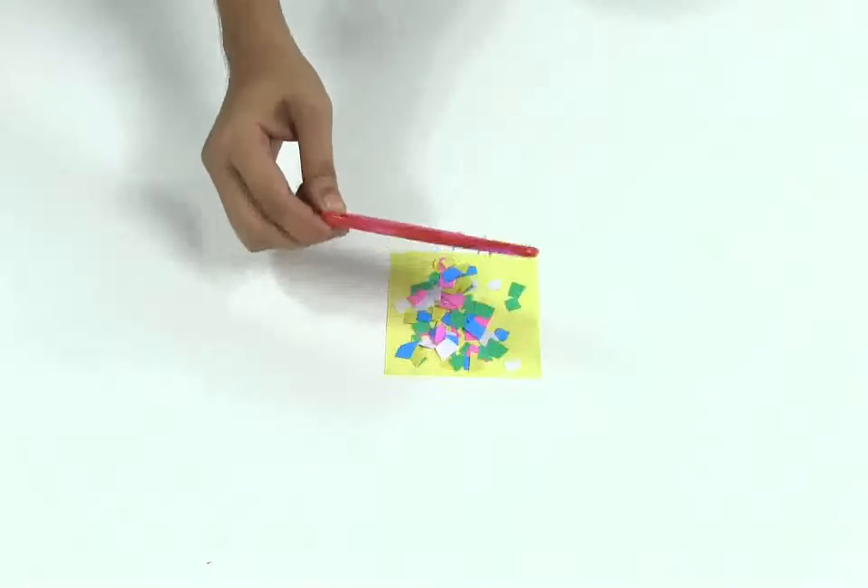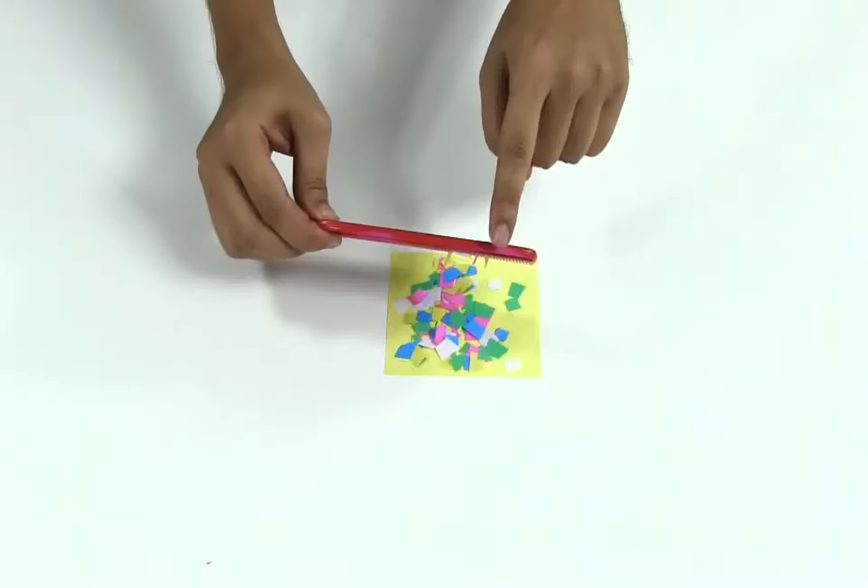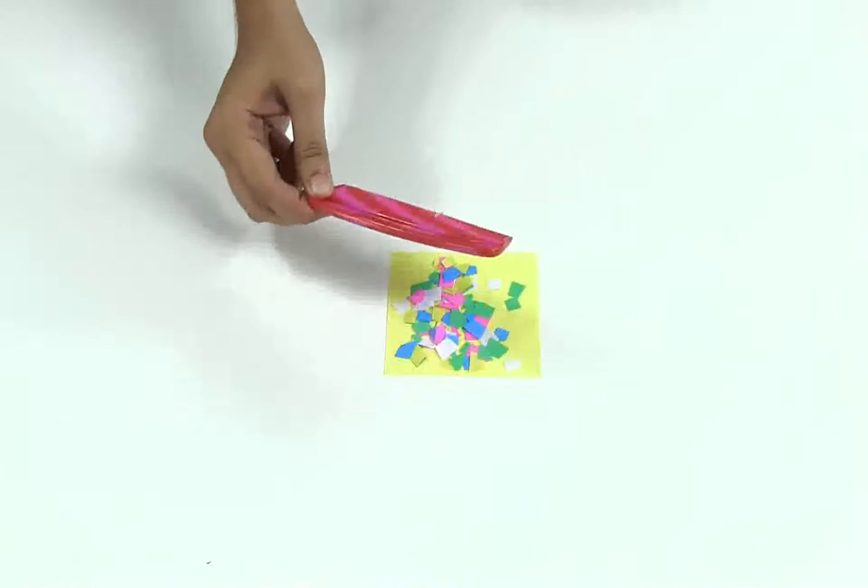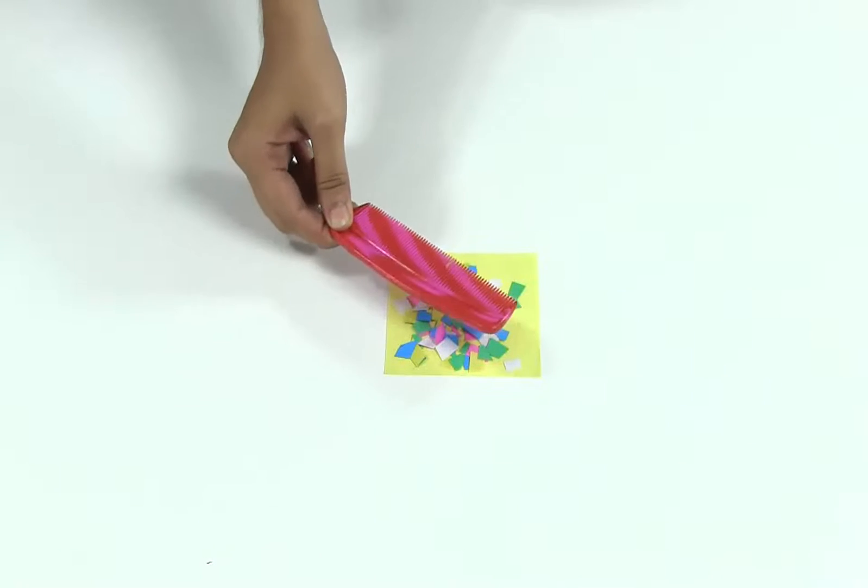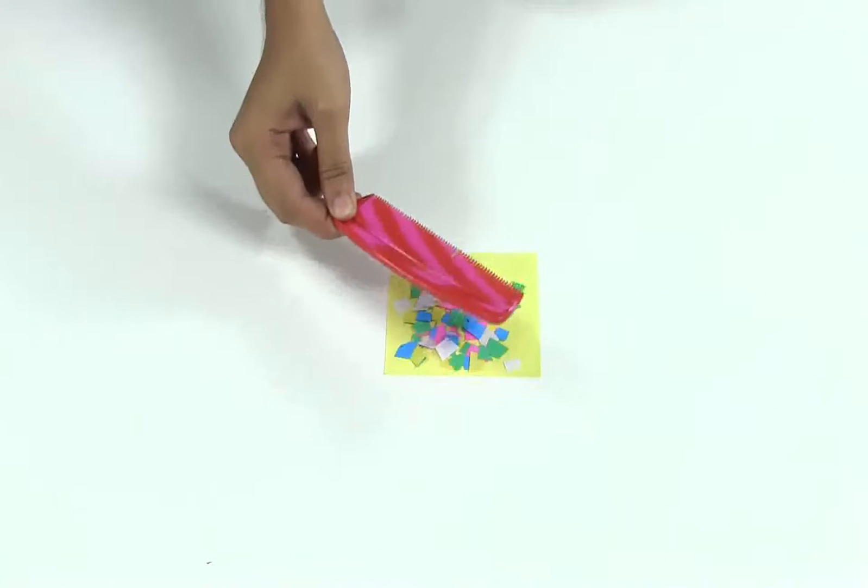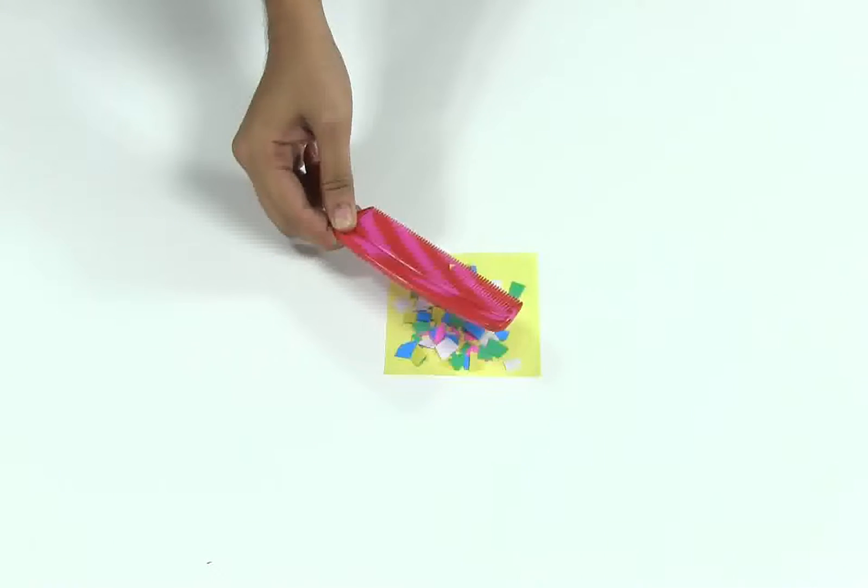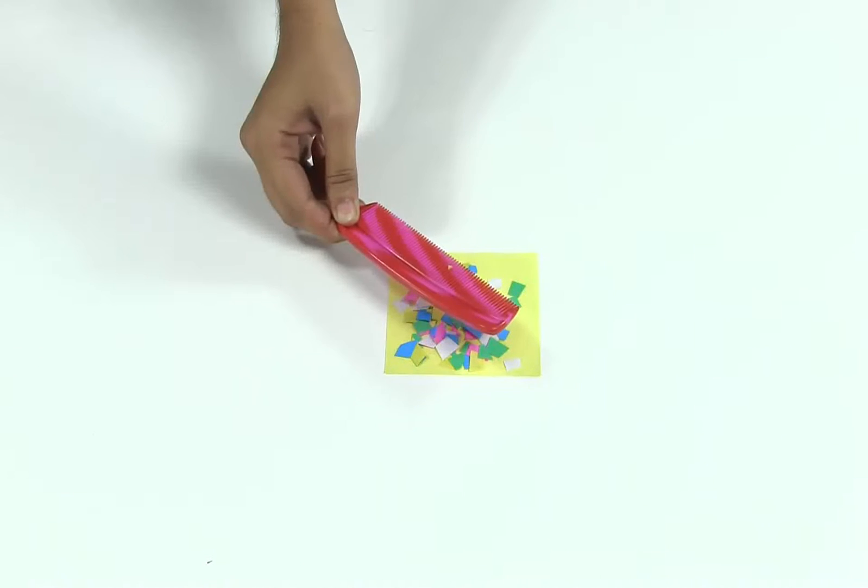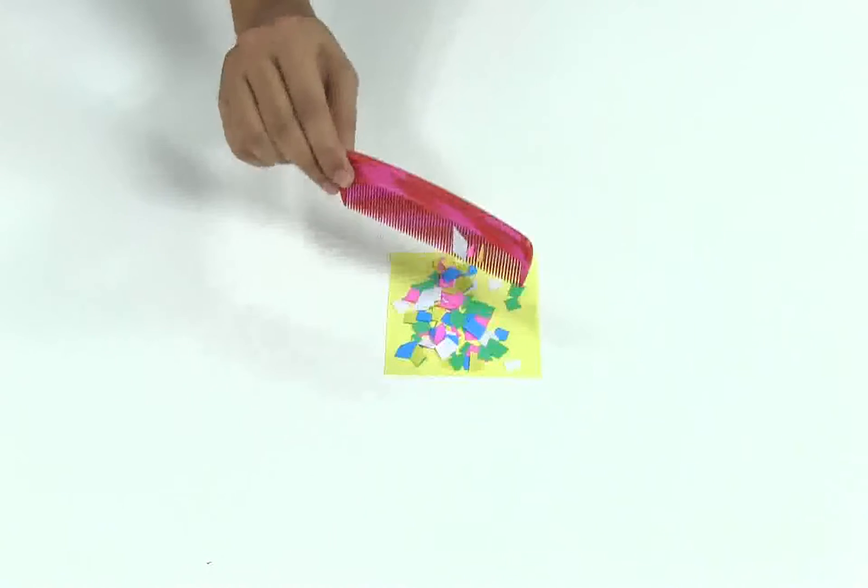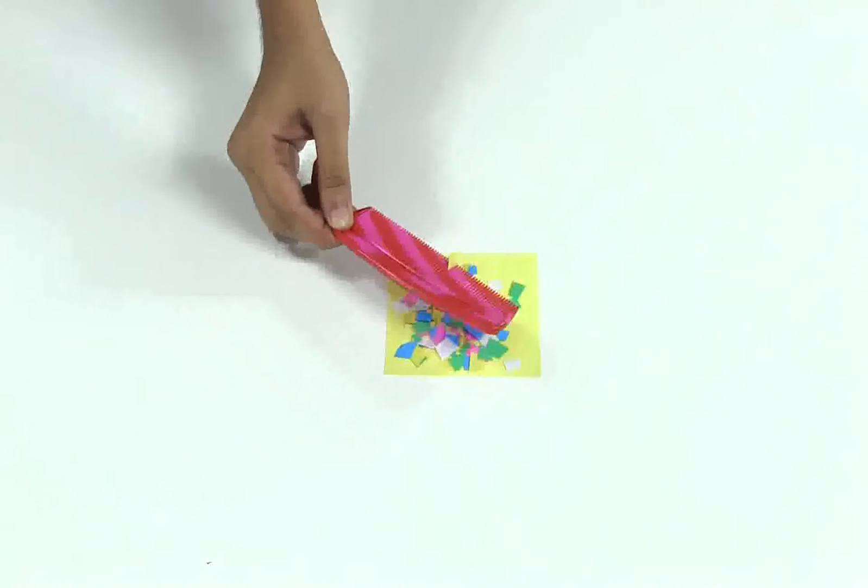So this comb gets negatively charged and your hair gets positively charged. When you take this comb and put it over these paper pieces, the negative charge in the comb induces positive charges in the papers. So positive charge attracts negative charge, and the paper pieces jump up to meet the comb.